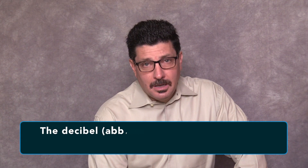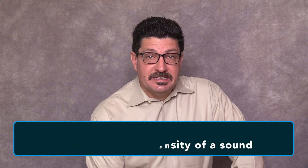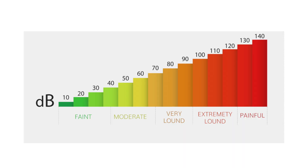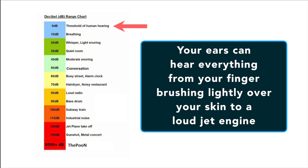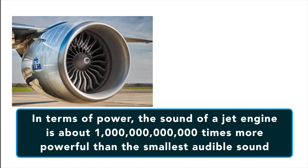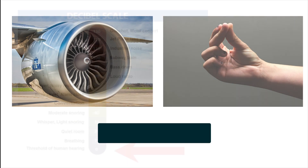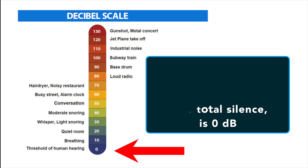The decibel, abbreviated as dB, is the unit used to measure the intensity of a sound. The decibel scale is a little odd because the human ear is incredibly sensitive. Your ears can hear everything from your finger brushing lightly over your skin to a loud jet engine. In terms of power, the sound of that jet engine is about one billion times more powerful than the smallest audible sound. On the decibel scale, the smallest audible sound to a human being — a sound near total silence — is zero dB.